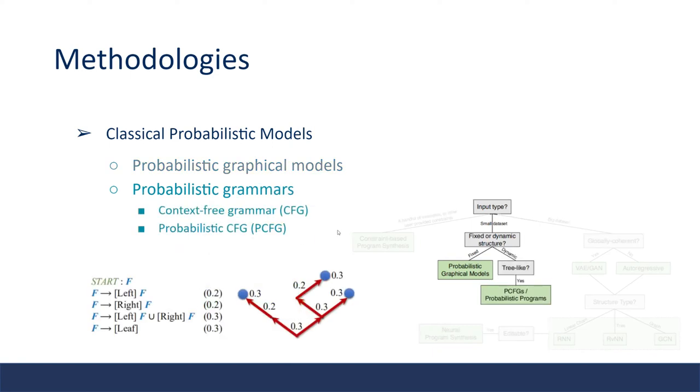If the structure can vary across the dataset, for example, when chairs can have three or four legs, or it can be with or without a back, then a probabilistic context-free grammar is better here. The term context-free grammar, or CFG, is commonly used in natural language processing. It consists of a start symbol, a set of terminals, and a set of non-terminals, along with a set of rules that map a non-terminal to another layout.